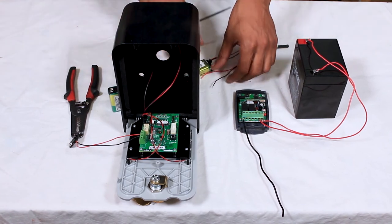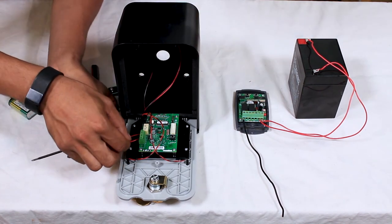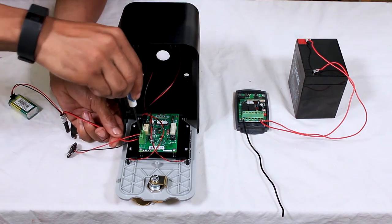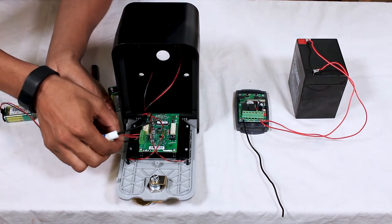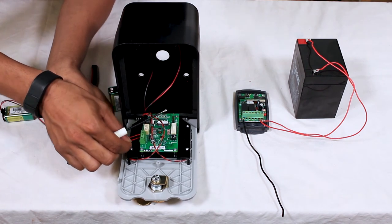Now we're going to wire in the module. You're going to take your red to the normally open and we're going to take the black to common.